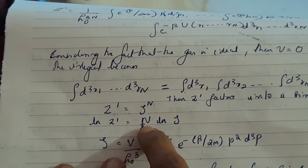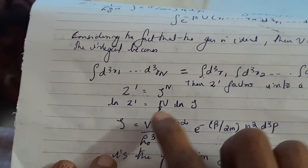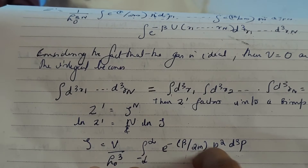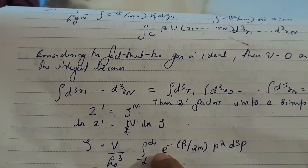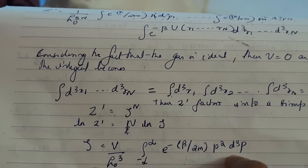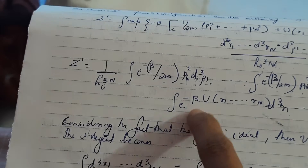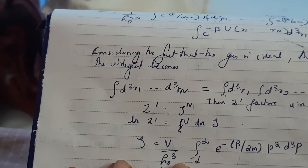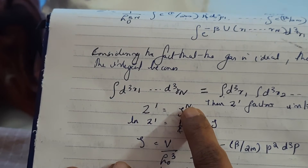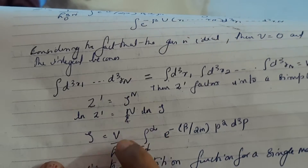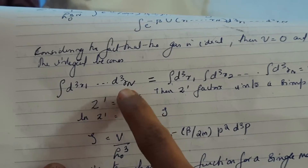So ln Z' equals N ln τ. Here τ is written in general form — an integral from minus infinity to plus infinity, representing the volume of the system, of e raised to minus beta p²/2m, times d³p, multiplied by the potential energy term. The potential energy term we already saw gives V/h₀³. This is for just one molecule, and the whole raised to N is for the whole gas, giving V^N. So this entire expression raised to N gives the total partition function.